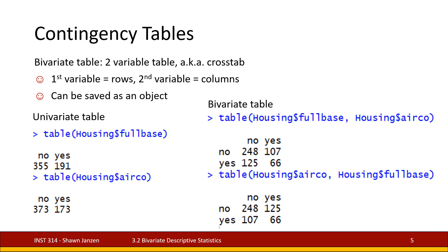I have two examples. One for the variable full_base, which indicates if you have a full basement or not in your house, and the air_co variable, which indicates if your house has air conditioning or not. Each of these, when you run them on their own, shows you a yes and a no — one variable at a time. When we do a bivariate table, we're putting two variables together in the same table output. In R, we use the same table function but add a comma and then the name of the second variable, and it puts the first one in the rows and the second in the columns.